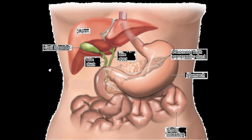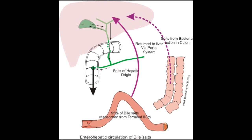The composition of gallbladder bile is 97% water, 0.7% bile salts, 0.2% bilirubin, 0.51% fats — cholesterol, fatty acids and lecithin — and 200 mEq/L in organic salts.